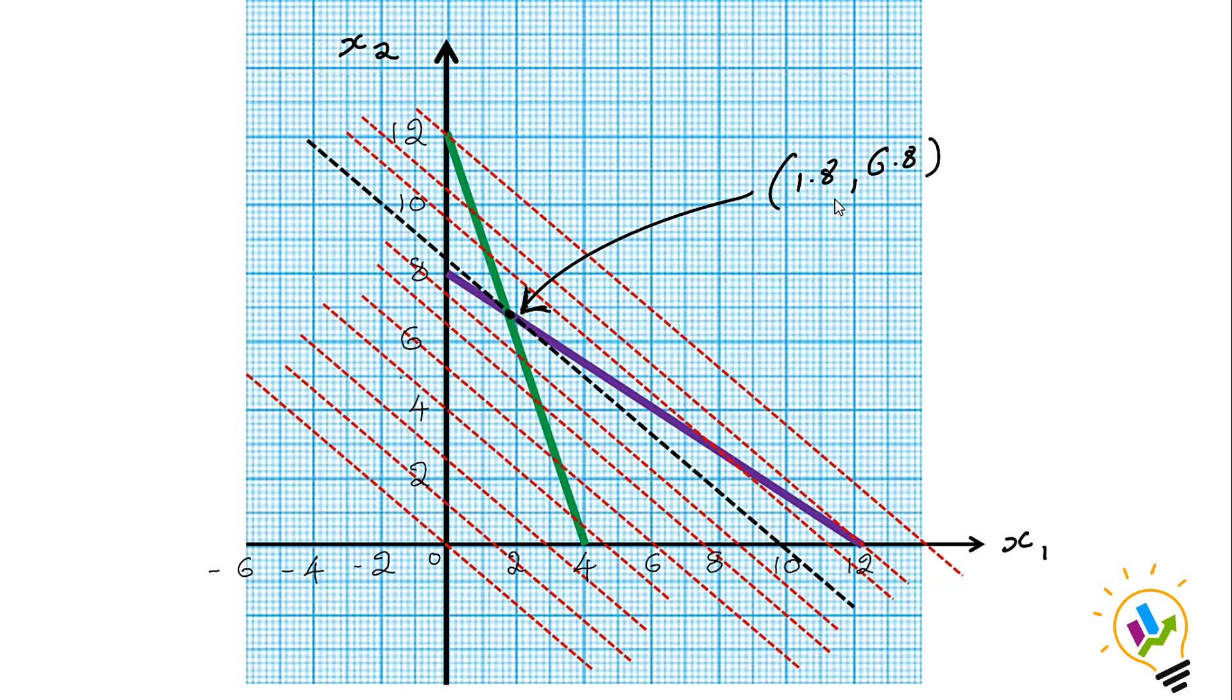This point is called the optimal point, which is (1.8, 6.8). For minimization case, the corner point should be closer to (0,0). For maximization case, it should be far. This point should be remembered.